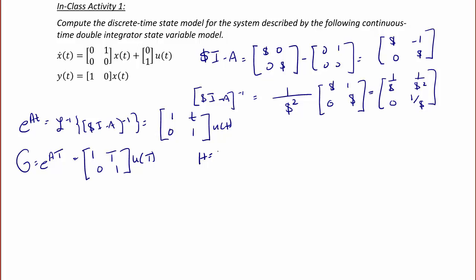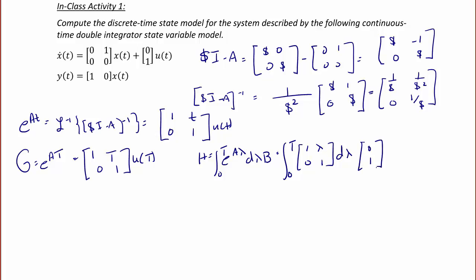H equals the integral from 0 to T of e to the A-lambda d-lambda times B, which equals the integral from 0 to T of [1, lambda; 0, 1] d-lambda, multiplied by [0; 1]. That integral gives [T, T²/2; 0, T], and multiplying by [0; 1] gives H equal to [T²/2; T].